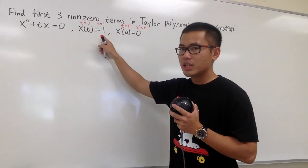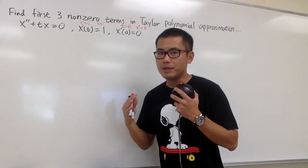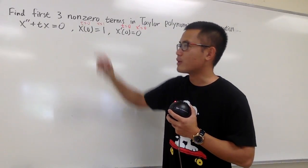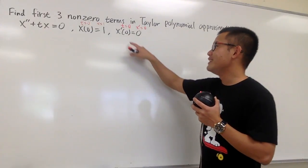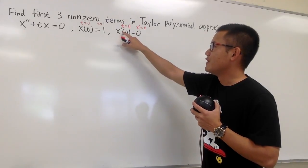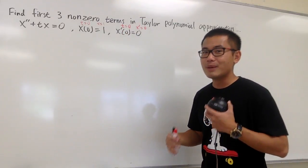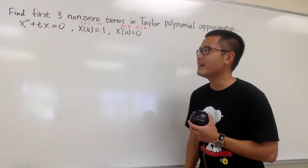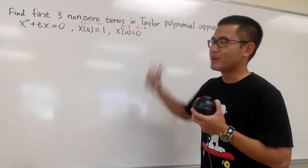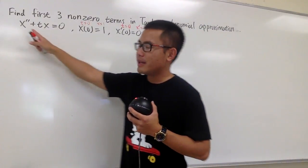This is going to give us the first term — we have the 1, and that's going to be the constant term because that's the value of the function. Unfortunately, the first derivative is equal to 0, so that is not the second non-zero term. We have to get more derivatives.